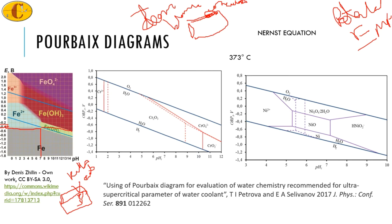If residual stresses from processing or manufacturing are present, or operational stresses such as the high internal pressure in boilers, these stresses add to the pitting and lead to cracking at the base of the pit in carbon steel.